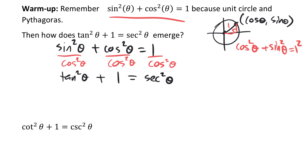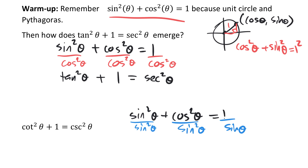We had that third formula: cotan squared theta plus 1 equals cosecant squared theta. Lest you think this comes out of thin air — if we take sine squared theta plus cos squared theta equals 1 as our starting point and divide by sine squared theta, then sine squared over sine squared is 1, cos over sine is cotan (squared), and 1 over sine is cosecant. So there we go — and here we have our other formula as well.